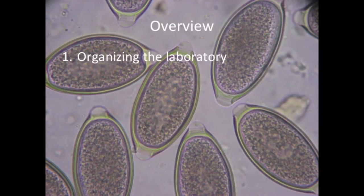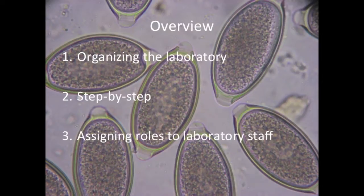In this tutorial we will first show how the laboratory can be organized efficiently using the three consecutive steps of the McMaster Egg Counting Method. Afterwards, these consecutive steps will be treated in more detail in order to optimize the procedure. The third part describes how the people in the laboratory can be assigned roles. We will finally give a few tips to guarantee the quality of each step.